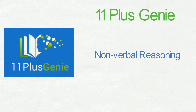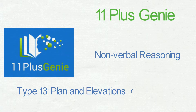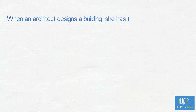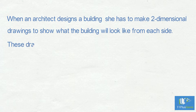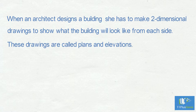Nonverbal reasoning type 13: plans and elevations of 3D shapes. When an architect designs a building, she has to make two-dimensional drawings to show what the building will look like from each side. These drawings are called plans and elevations.